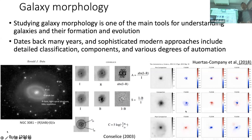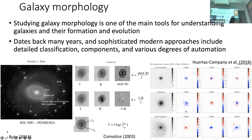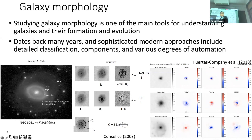I'll start off very generally by talking about galaxy morphology. Galaxies occur in many shapes, and studying galaxy morphology is one of the main tools for understanding galaxies and their formation and evolution. This dates back many decades. Sophisticated modern approaches include, on the left here, detailed classification by eye, done by my colleague Ron Buta, who is one of the experts in this, looking at features in detailed images and deriving a detailed classification.